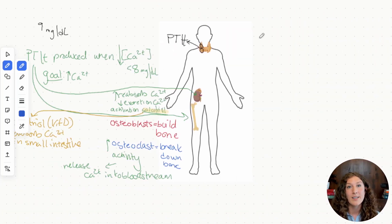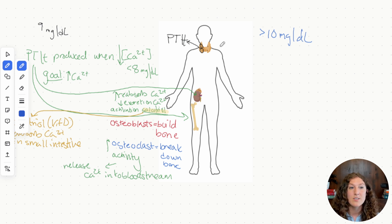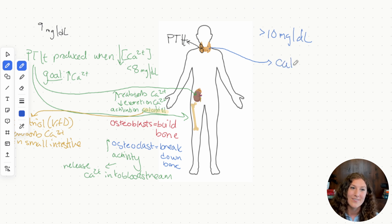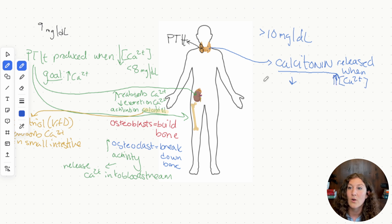What happens if blood calcium levels get too high — like greater than 10 mg/dL, say 15 or 20? Our body says calcium levels are too high, we need to drop those down. The way we do this is through the thyroid gland, which releases a hormone called calcitonin. Calcitonin is our reciprocal hormone to PTH — PTH raises blood calcium, while calcitonin has the opposite action to decrease it.